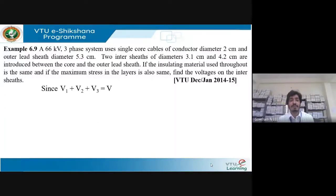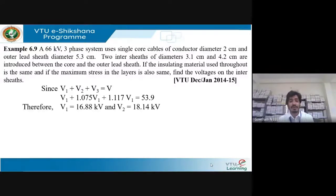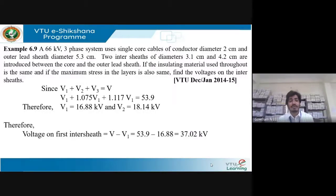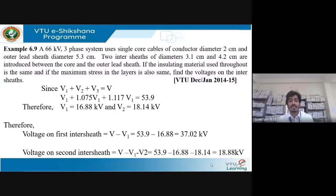Since V1 + V2 + V3 = V, substituting the expressions for V2 and V3 and the known V, we find V1 = 16.88 kV and V2 = 18.14 kV. Voltage on the first inter-sheet = V − V1 = 53.9 − 16.88 = 37.02 kV. Voltage on the second inter-sheet = V − V1 − V2 = 18.88 kV.